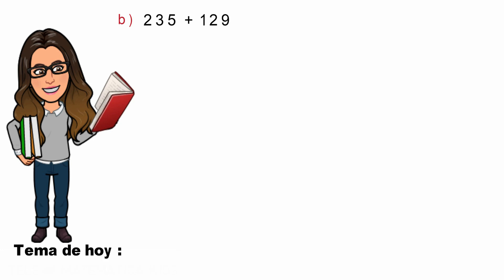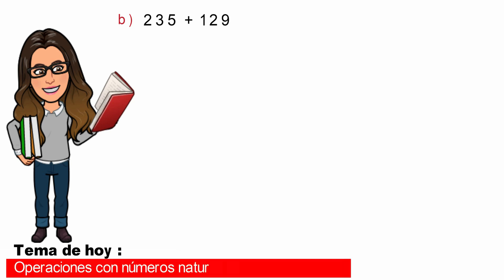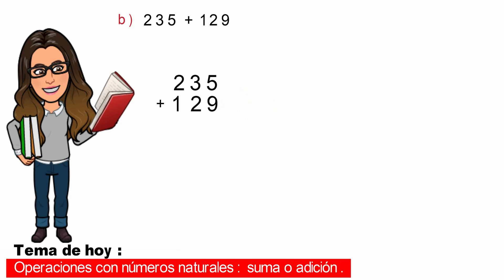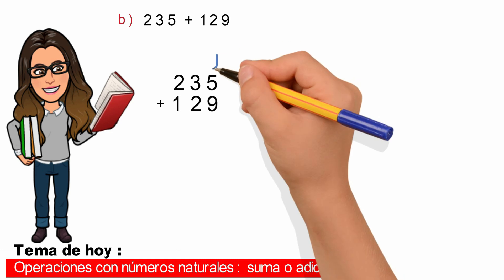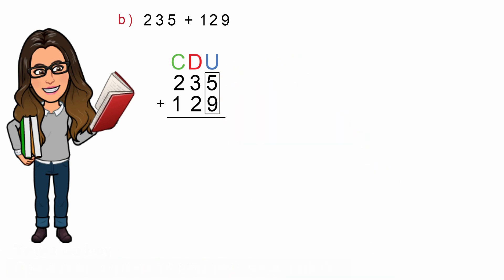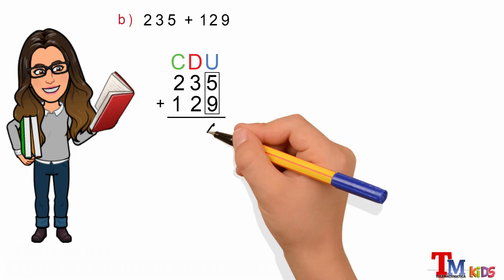En primer lugar, escribiremos los números verticalmente, teniendo en cuenta ubicar la unidad debajo de la unidad, la decena debajo de la decena y la centena debajo de la centena. Identificaremos la columna de las unidades, la columna de las decenas y la columna de las centenas. En segundo lugar, comenzaremos la suma por la columna de las unidades: 5 más 9 es igual a 14. Escribo el 4 y llevo 1.